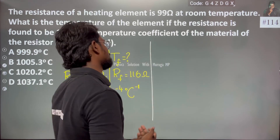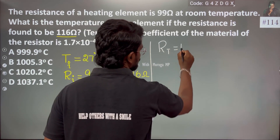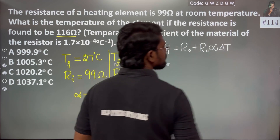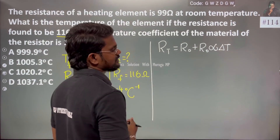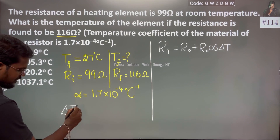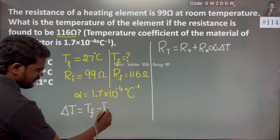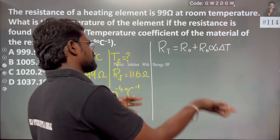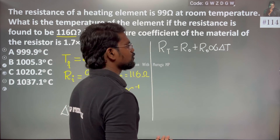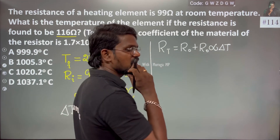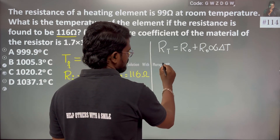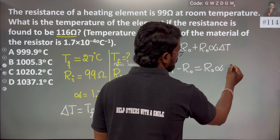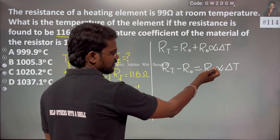For conductors, insulators, and semiconductors we have the formula: Rt = R0 + R0·α·ΔT, where ΔT is the change in temperature — that is, final temperature minus initial temperature. We can rearrange this formula: Rt minus R0 equals R0·α·ΔT.